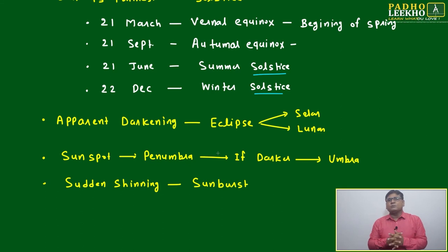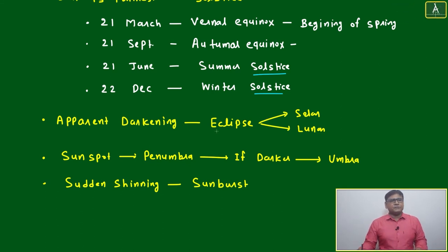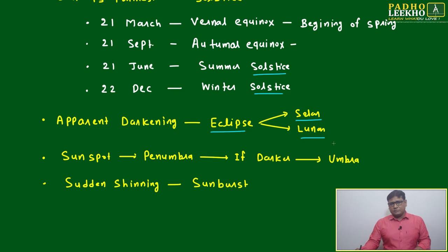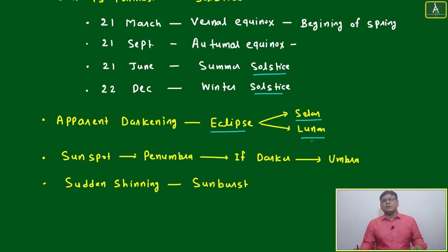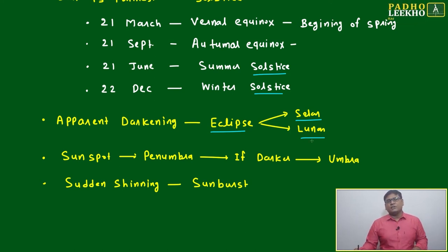Apparent darkening due to the moon hiding the path of the sun is called an eclipse. There are two types: solar eclipse and lunar eclipse. When the sun comes between the earth and moon, it is a lunar eclipse.